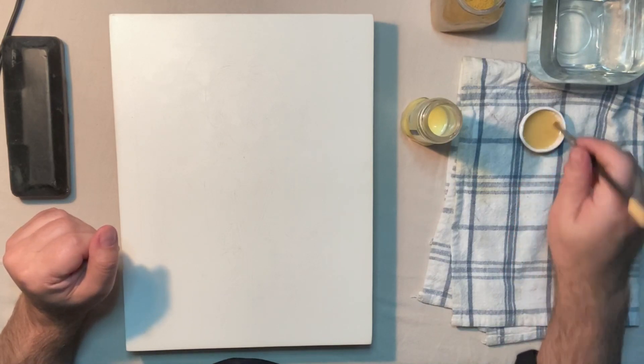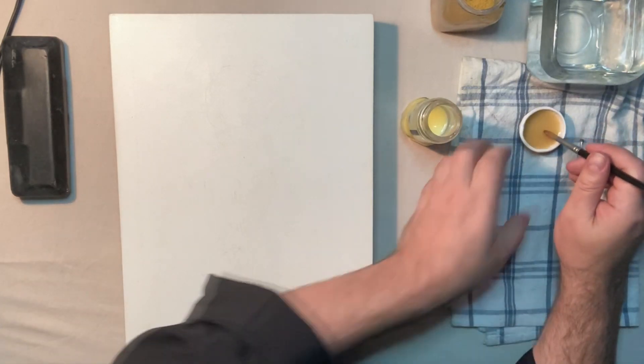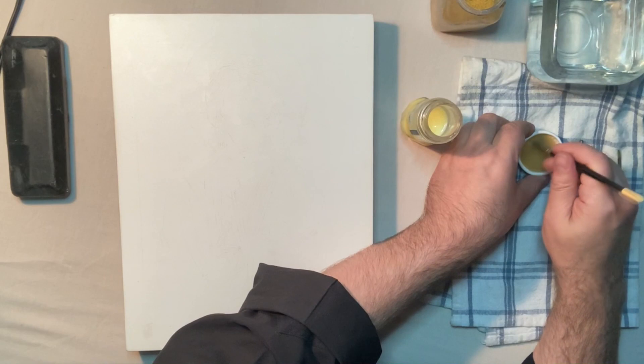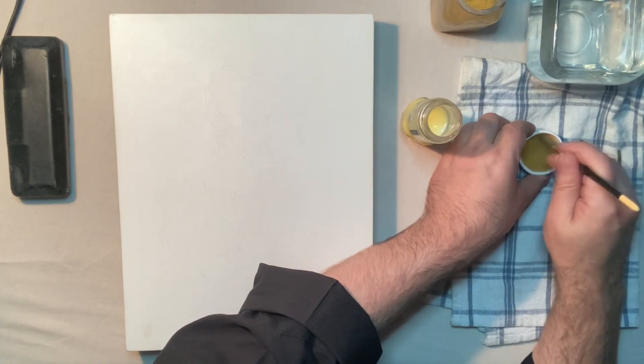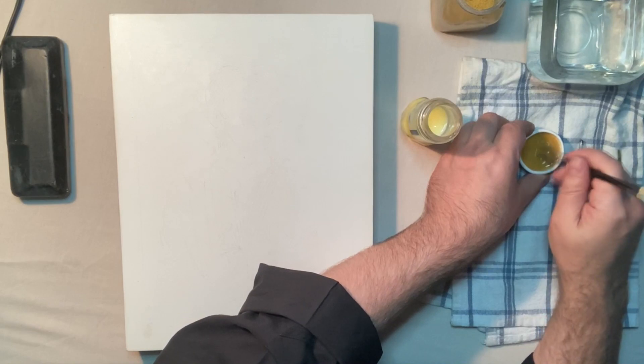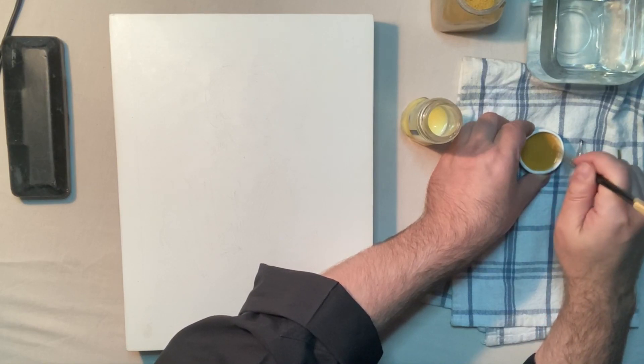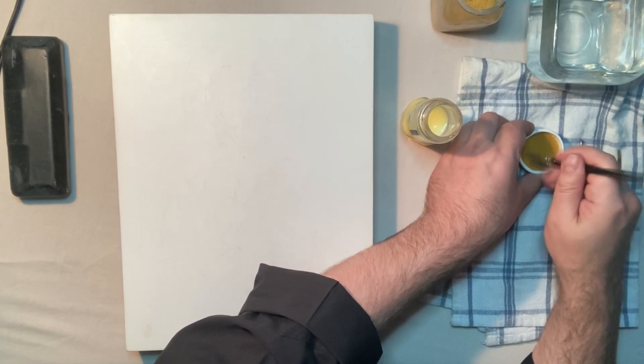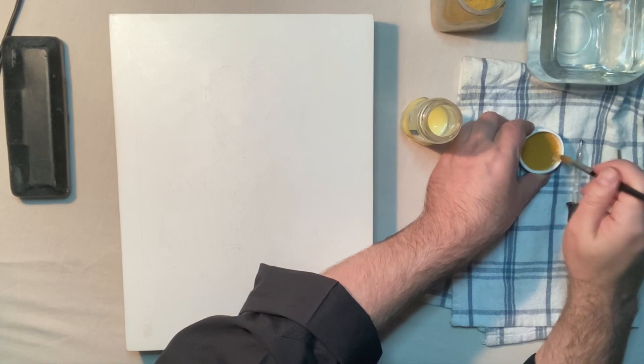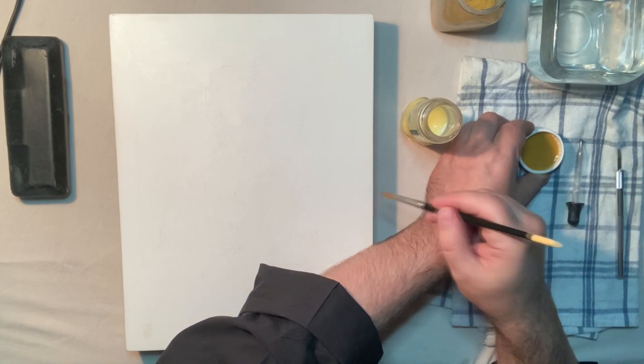You see me opening the jar with yolk emulsion, which contains egg yolk one part, water two parts, white vinegar about one and a half parts, and several drops of Gallipot Mastic. I use Mastic Varnish by German brand Schmincke. It will help protect the paint layer from subsequent erosion, making our paints tougher.